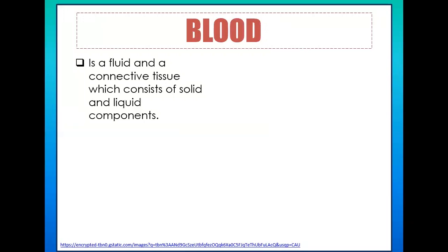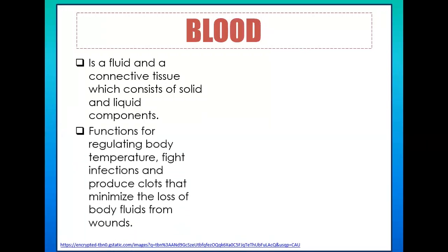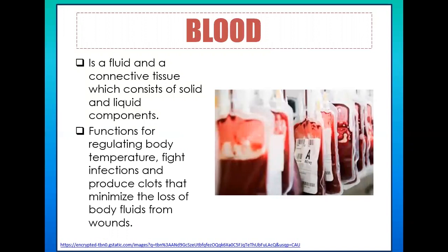Blood has a pH level between 7.2 and 7.6, and its temperature is slightly higher than normal body temperature — approximately 38 degrees Celsius. The functions of this fluid tissue include regulating body temperature, fighting infections, and producing clots that minimize the loss of body fluids from wounds. These functions will be further explored when we discuss the components of blood, which is why blood is called the river of life.